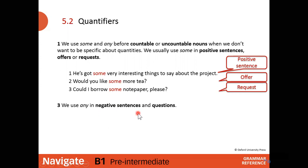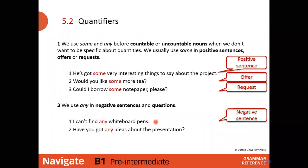We use 'any' in negative sentences and questions. For example: 'I can't find any whiteboard pens' — this is a negative sentence because of 'can't,' and 'pens' is countable plural. 'Have you got any ideas about the presentation?' — 'any' plus 'ideas,' which is countable plural, and this is a question.